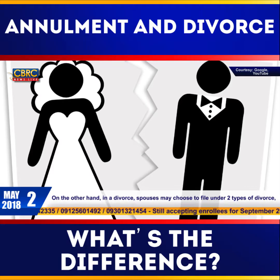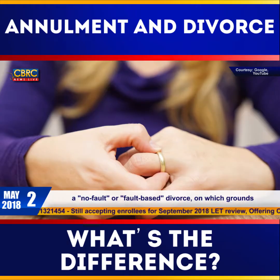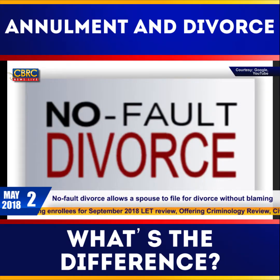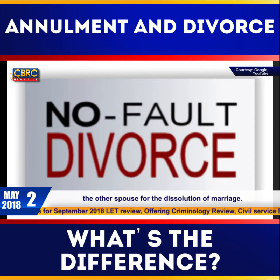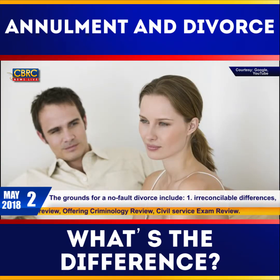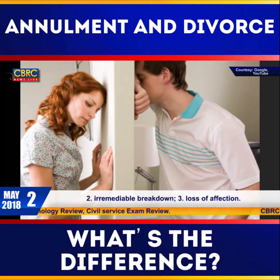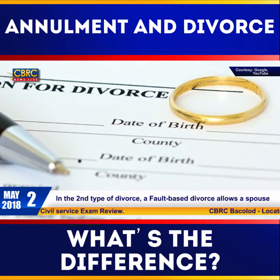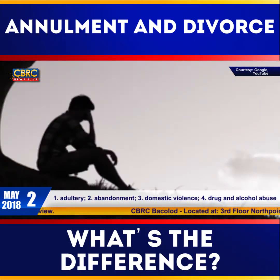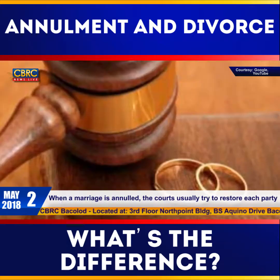On the other hand, in a divorce, spouses may choose to file under two types: a no-fault or a fault-based divorce, where grounds for divorce happen after or during the marriage. A no-fault divorce allows a spouse to file for divorce without blaming the other spouse for the dissolution of marriage. Grounds for a no-fault divorce include: 1. Irreconcilable differences, 2. Irremediable breakdown, and 3. Loss of affection. A fault-based divorce allows a spouse to file on the grounds of: 1. Adultery, 2. Abandonment, 3. Domestic violence, and 4. Drug and alcohol abuse.